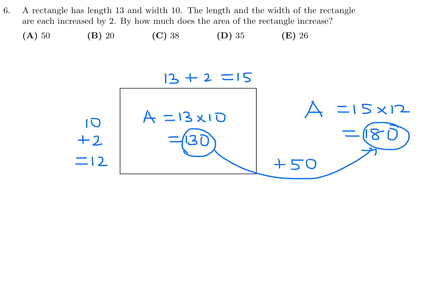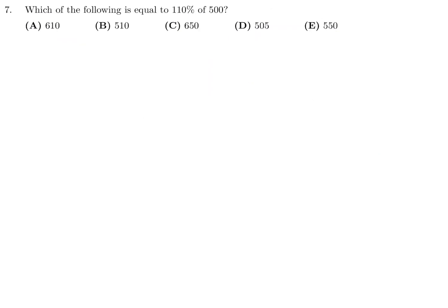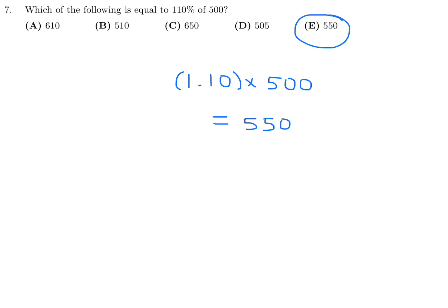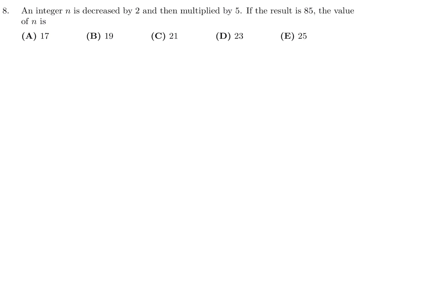Number 6, the answer is 50. Which of the following is equal to 110 percent of 500? 110 percent can be written as 1.10, then multiply by 500 to get 550. Number 7, the answer is E.